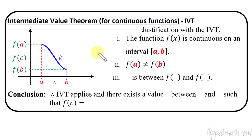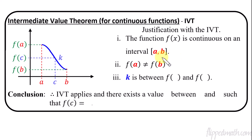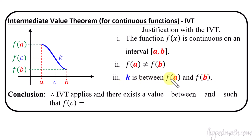You might even write that k equals f(c). The reason we use k is just for shorthand. k is in between the two output values of f(a) and f(b) — that's what the value k is. In other words, we could have just said f(c) is in between f(a) and f(b).